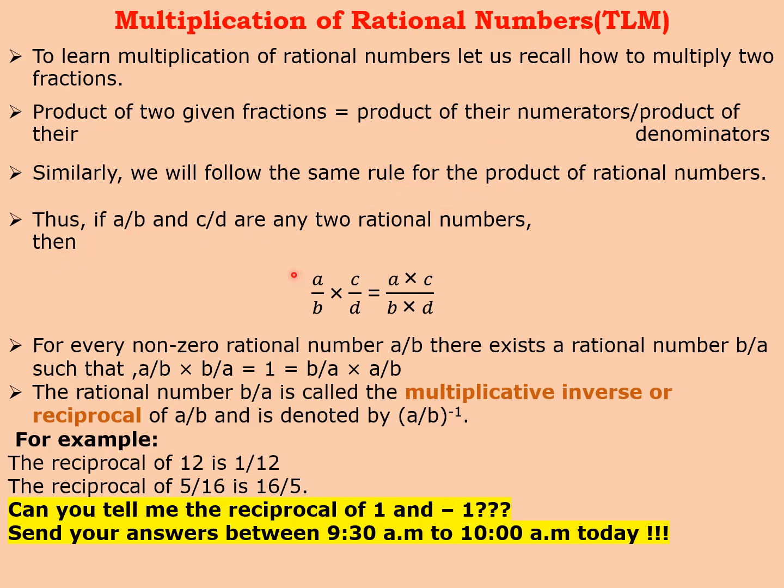Thus, if a by b and c by d are any two rational numbers, then a by b into c by d will be equal to a into c multiplying the numerators divided by b into d multiplying the denominators. For every non-zero rational number a by b, there exists a rational number b by a such that a by b into b by a is always equal to 1. The rational number b by a is called the multiplicative inverse or reciprocal of a by b and is denoted by a by b to the power minus 1.